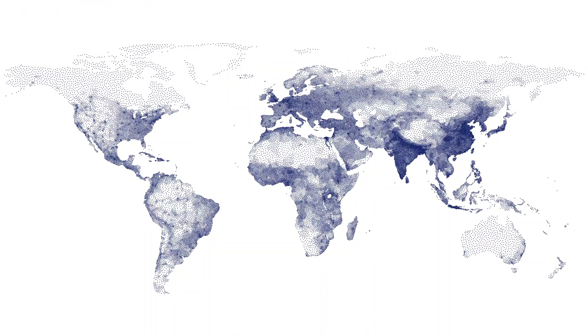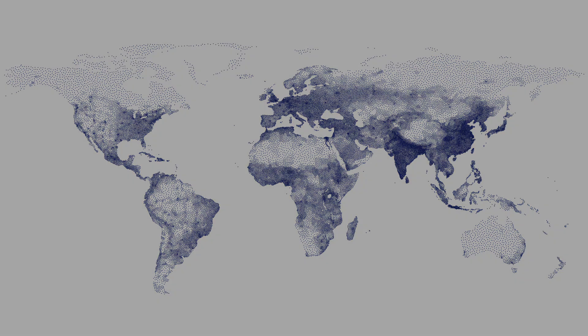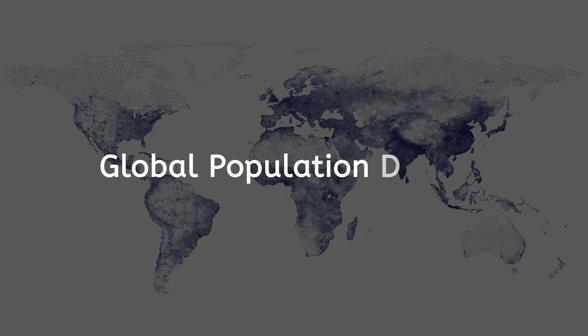If you wrote in the preview that this map shows where people live, you're absolutely right. If this map had a title, it would be Global Population Density. The more people that live in a place, the darker the coloration appears on the map. You might even be able to spot a city near you.